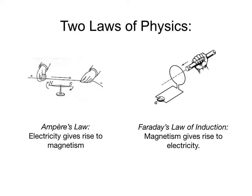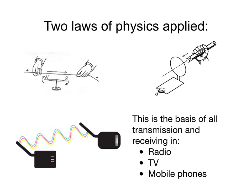We have these two laws of physics. Ampere's law: if we pass a current along a wire or conductor, it gives rise to magnetism — an electromagnetic field is created around the wire. And Faraday's law of induction says the opposite: if we move a magnet near a wire, the magnetic field will give rise to electricity. These laws are applied all around us, as the basis of all transmission and receiving — in radios, TV, and mobile phones.